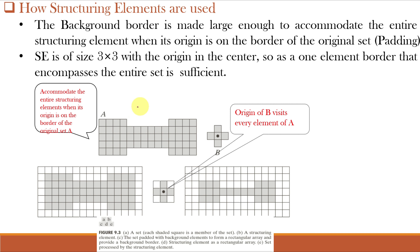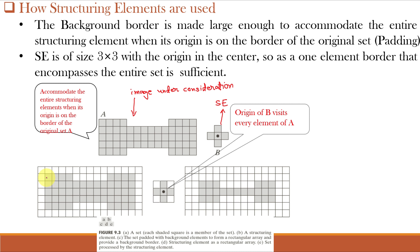This is our image under consideration and this is the structuring element. First, we will pad the image under consideration in this manner to form a rectangular array and provide a background border. This is the structuring element as a rectangular array. Now, we will keep this structuring element on this image — if it is fitting, then we will shade the pixel, otherwise we leave it as is.